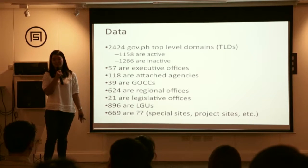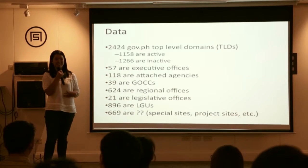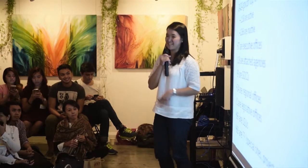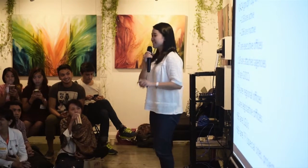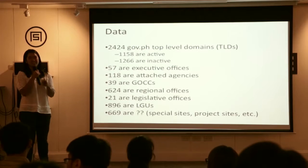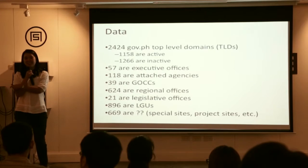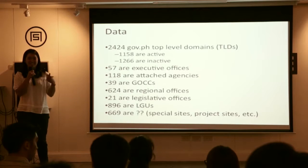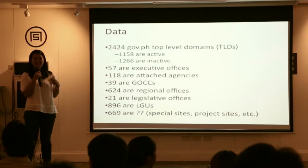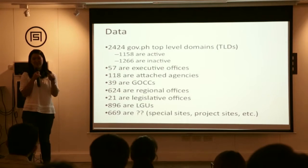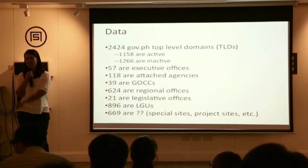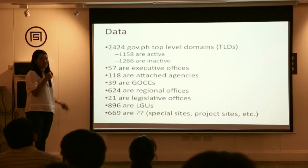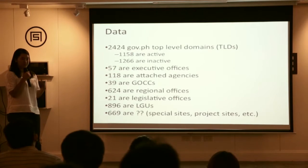Some of these are just special requests — even vanity domains. For example, a director requests a specific domain because he wants it that way, and it gets created. So that's the DNS landscape of the government. Can you imagine sorting through 2,424 websites just to get information from one?